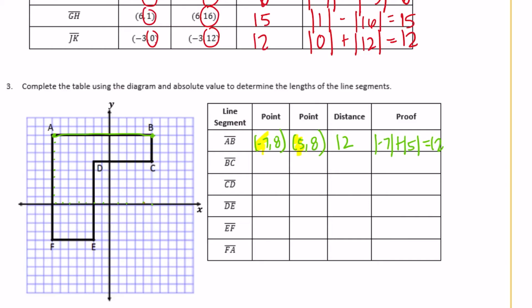Segment BC: B was at 5, 8 and C is at 5, 5. They differ in the y-coordinate and they're on the same side of 0 because both are positive. So we subtract: absolute value of 8 minus absolute value of 5 equals 3. The distance is 3. You can verify by counting on the graph — 1, 2, 3.